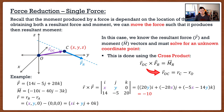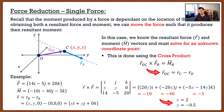Using whatever cross product method you prefer — I use the fish method — I find that the cross product gives me: 20y in the i-direction, −20x in the j-direction, and (−5x − 14y) in the k-direction. Now, this resultant vector from the cross product must equal our moment vector. So the i-component: 20y = −10; the j-component: −20x = −40; and the k-component: −5x − 14y = −3. From the i and j components, we can quickly solve that x = 2 and y = −0.5.